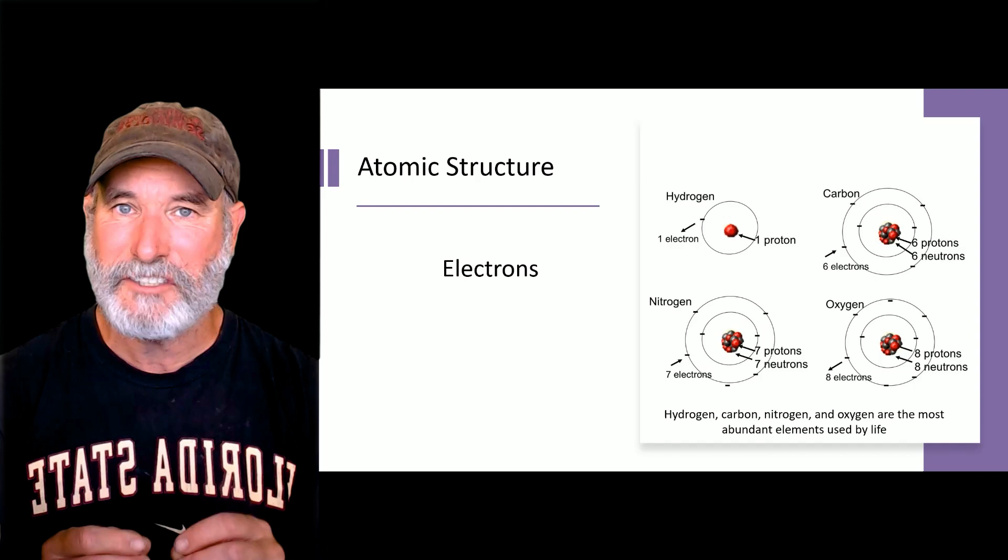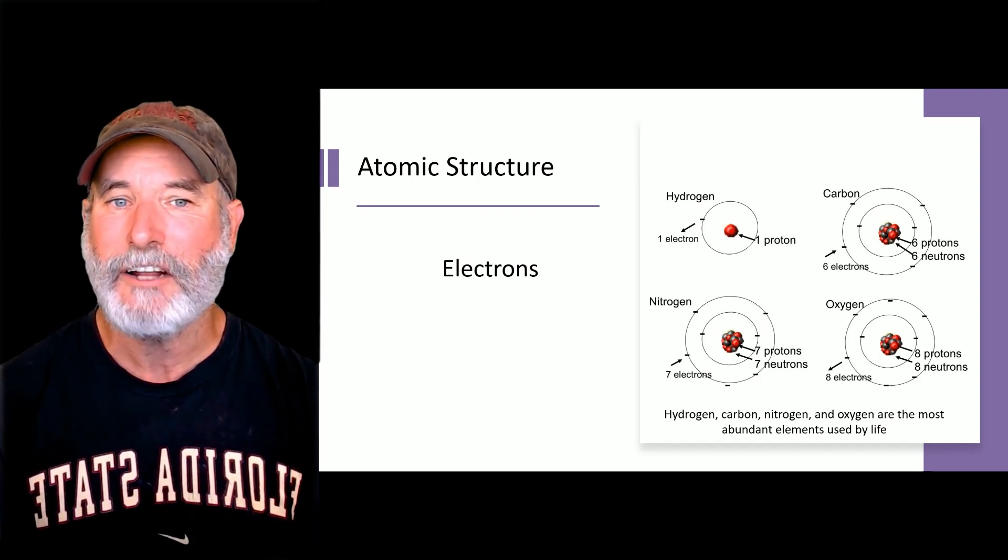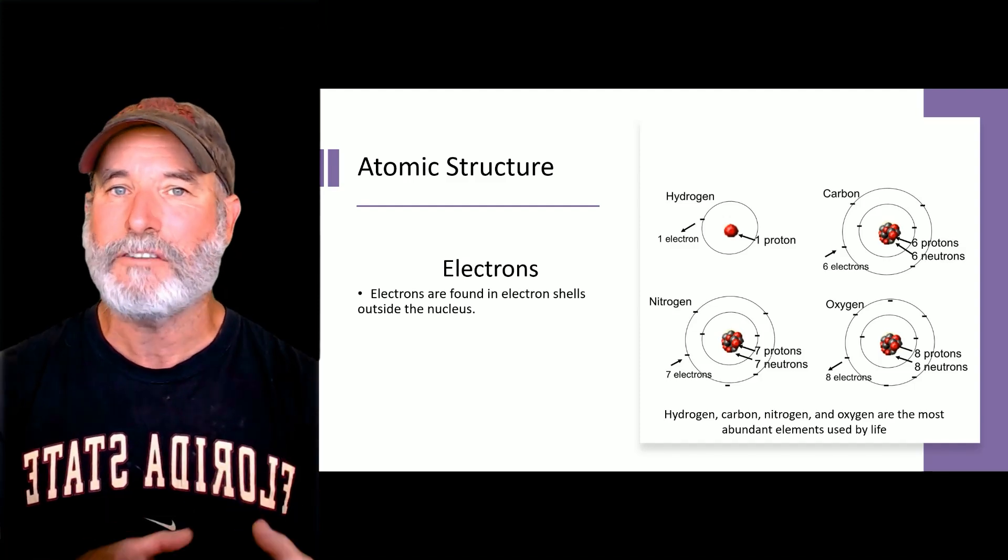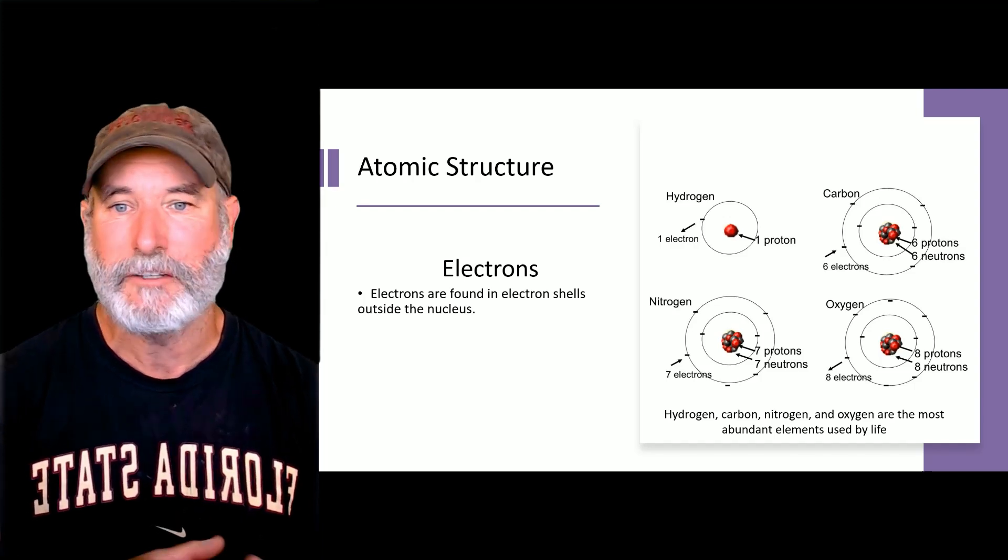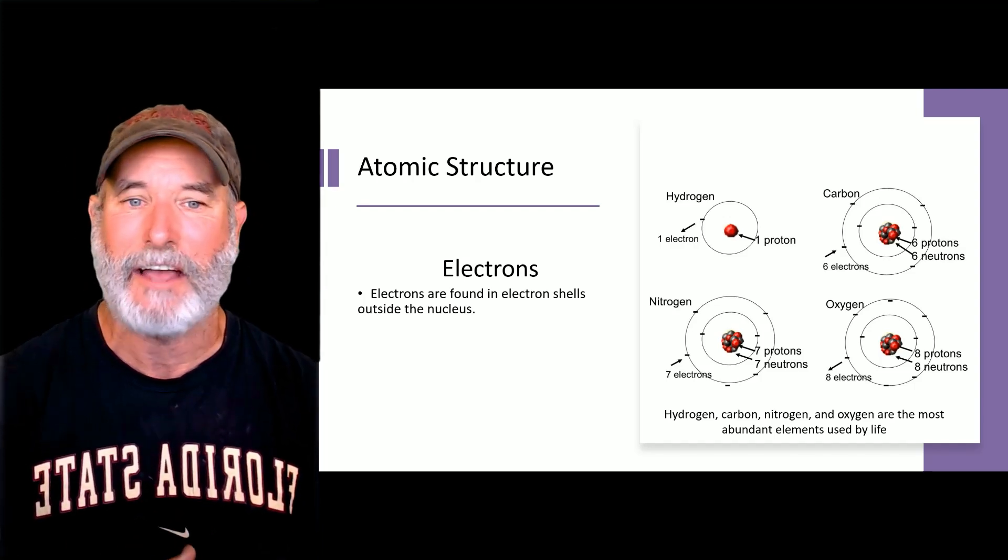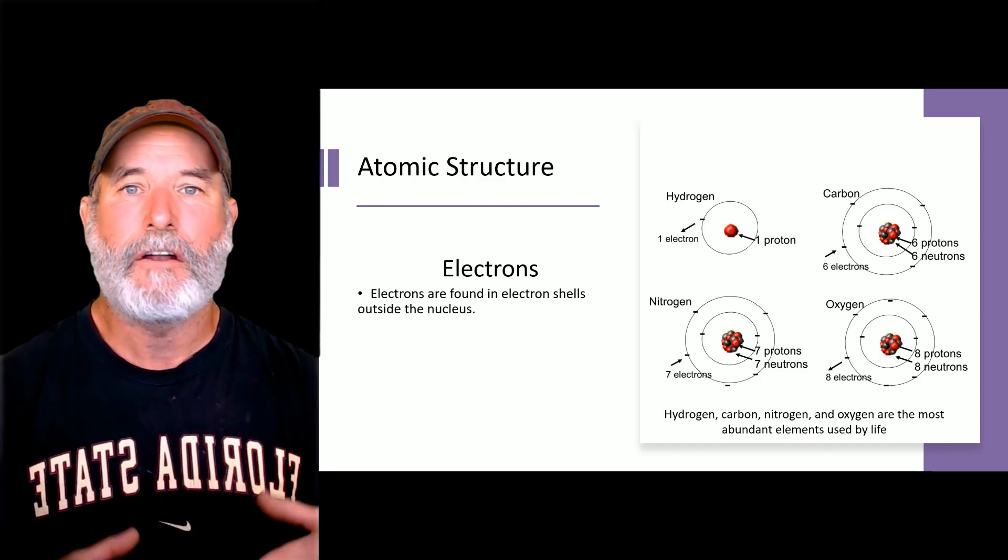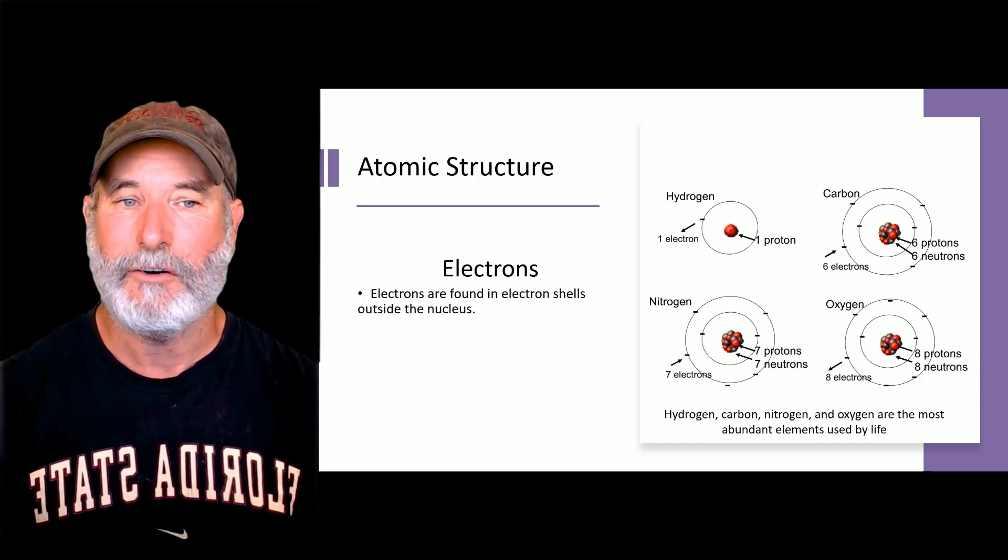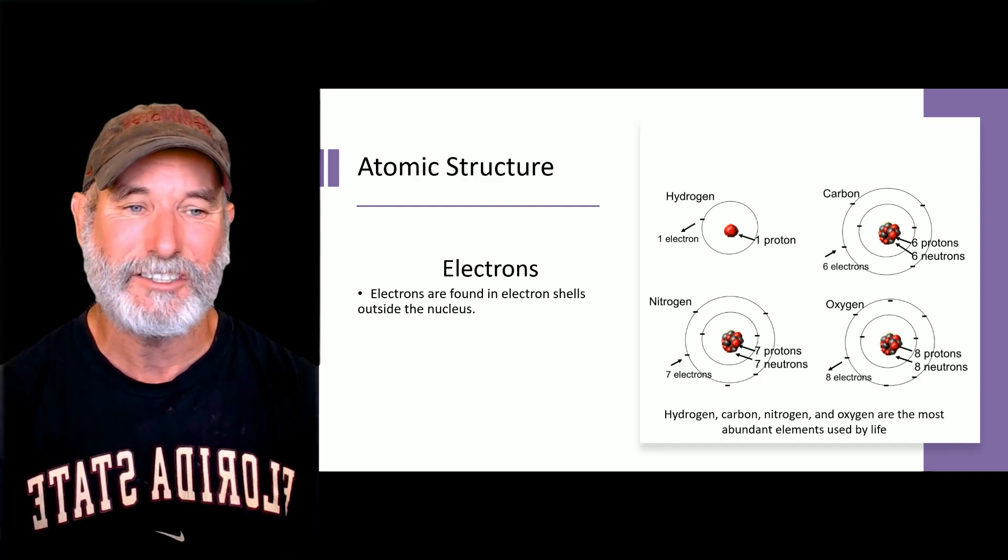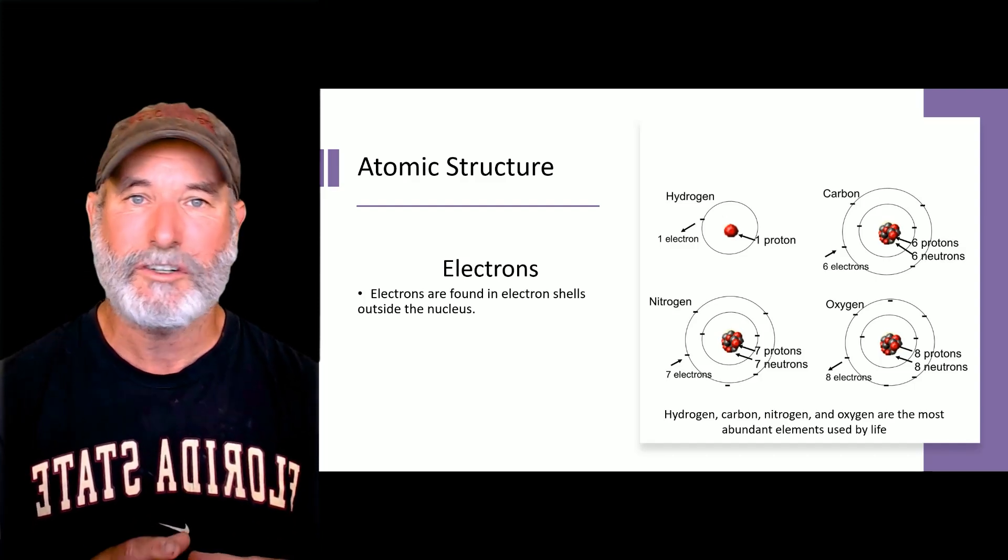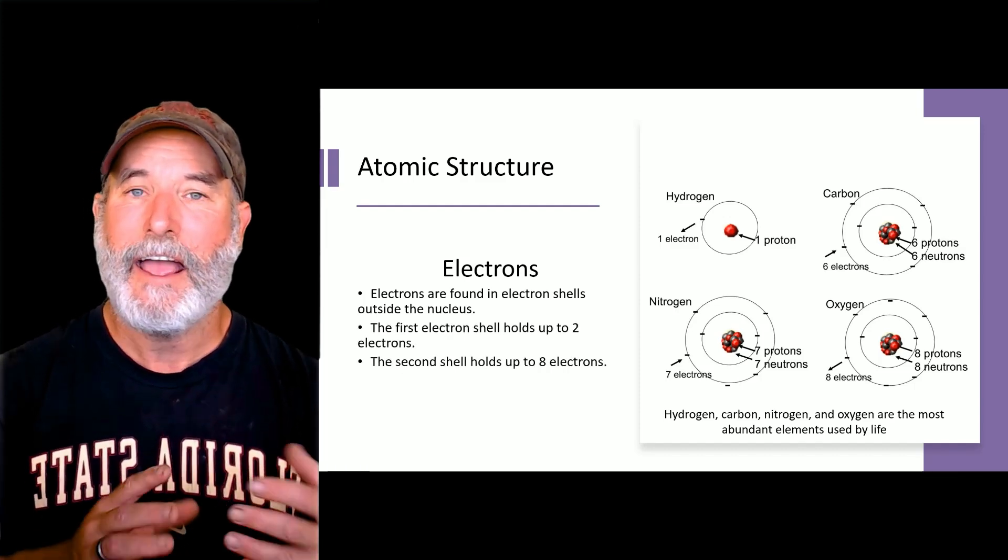Because the number of these positively charged protons also equals the number of electrons. Now, electrons are about a thousand times less massive than the protons or the neutrons, because protons and neutrons weigh about the same. But these electrons are generally found in what's called electron shells that are found outside the nucleus. So, once again, you can see our atoms here, the hydrogen, the carbon, the nitrogen, and the oxygen. And you'll notice that there's one shell, and that first shell holds two electrons. And then the second shell holds up to eight electrons.